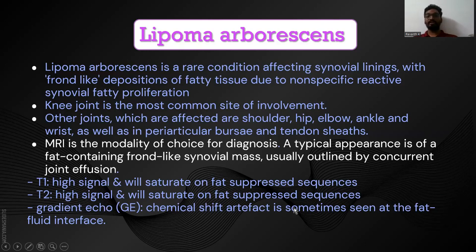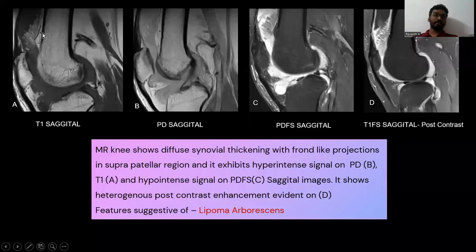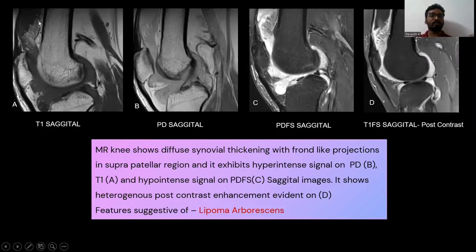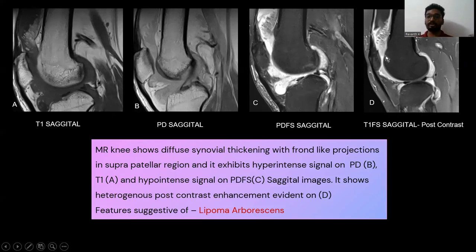On gradient echo sequences, a fat-fluid level can sometimes be seen. In our case, the patient came with knee pain. There is a frond-like mass in the suprapatellar region appearing hyperintense on T1 and PD, and hypointense on PDFS. On post-contrast, heterogeneous enhancement is seen, suggestive of lipoma arborescens.